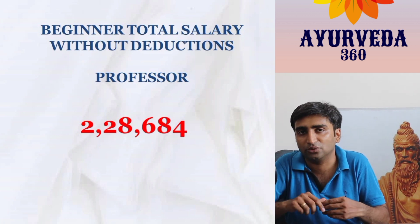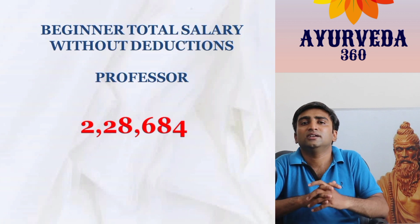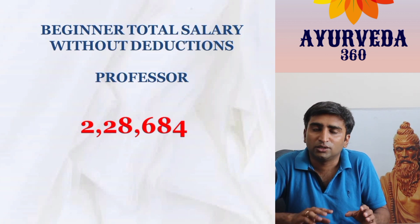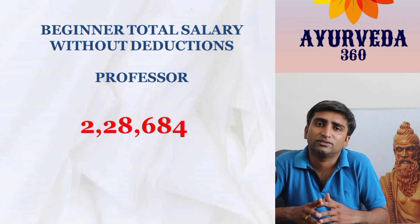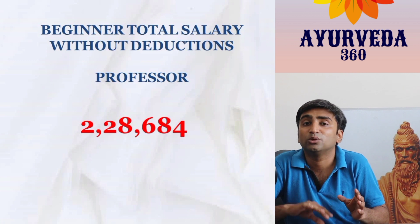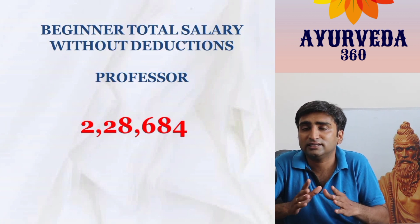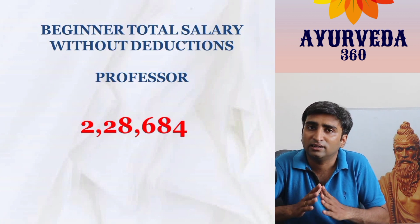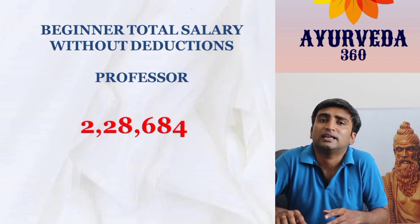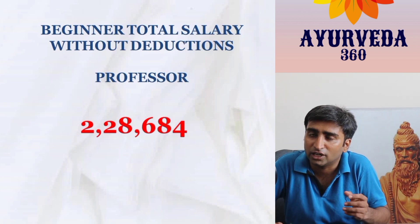These are the three current salary levels at NIA. In future, there will be two gradations for Assistant Professor — lower scale and higher scale — but this is yet to be implemented. Currently, these three levels represent the salary methodology at NIA.